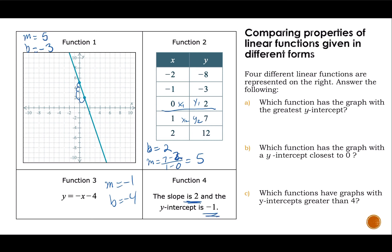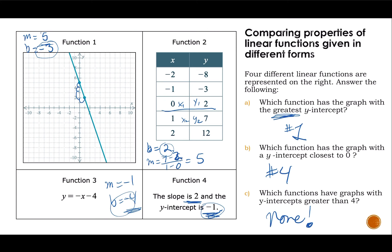Which function has the graph with the greatest y-intercept? That's going to be function one, because its y-intercept is five. The next greatest would have been two, then negative one, then negative four. Which function has the y-intercept closest to zero? I've got two and negative one — negative one is closer to zero, so it's number four. Which functions have graphs with y-intercepts greater than four? It's going to be none of them, because I've got negative three, two, negative four, and negative one. None is an option as well.